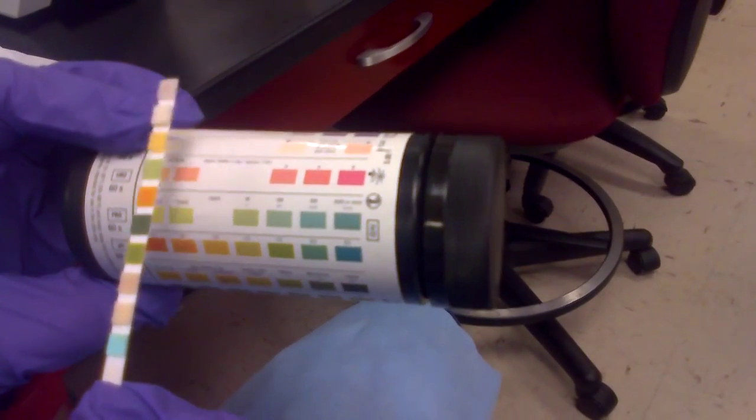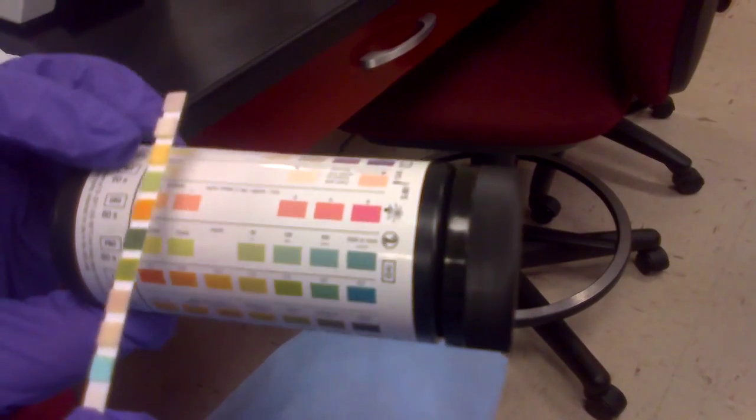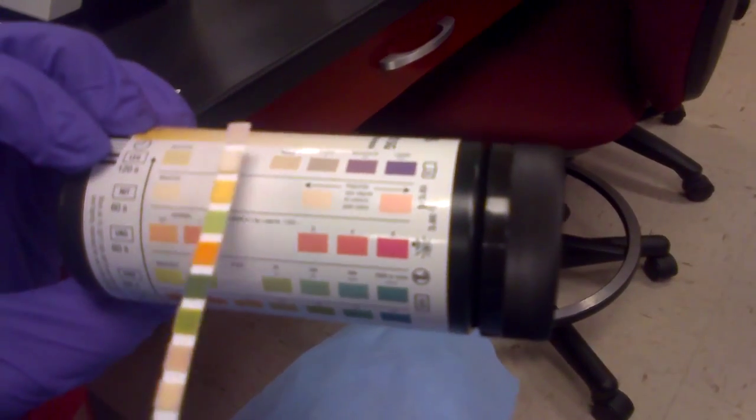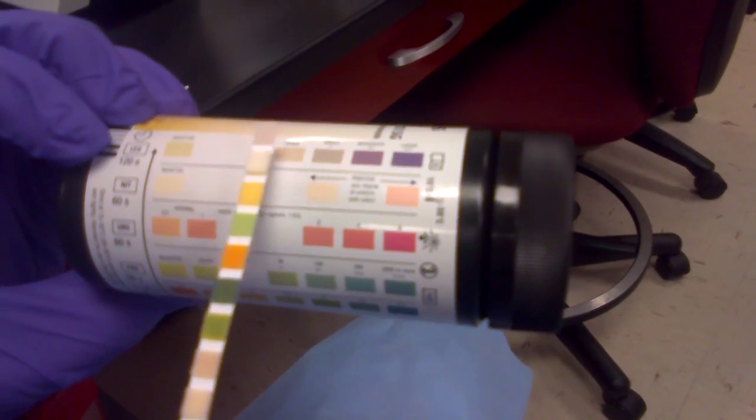Urobilinogen is next, and we have just a normal amount. We have a negative for nitrite and a trace of leukocyte esterase.